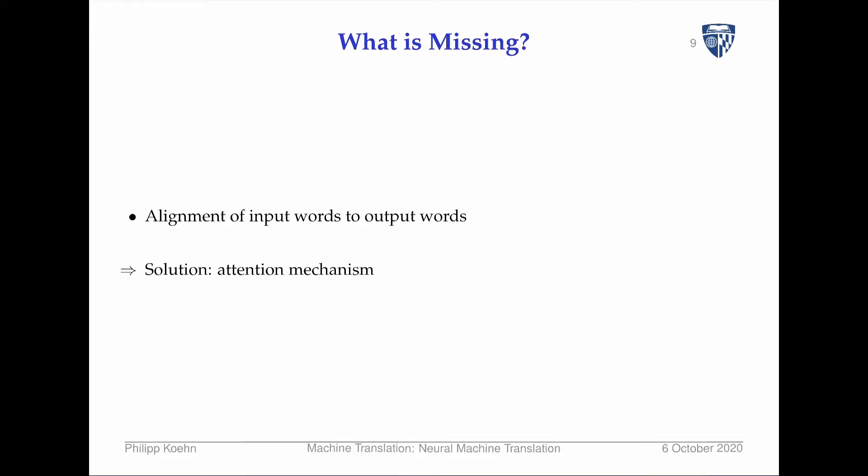What's missing is some form of alignment of input words to output words. When making a prediction over a particular output word, there should be something guiding the model to say 'this input word matters most — pay a lot of attention to it.' The solution is the attention mechanism, and that was basically the breakthrough for neural machine translation. It was proposed about a year after this simple model and gave for the first time competitive and sometimes better results than traditional statistical machine translation models.